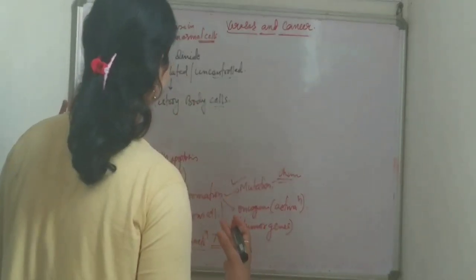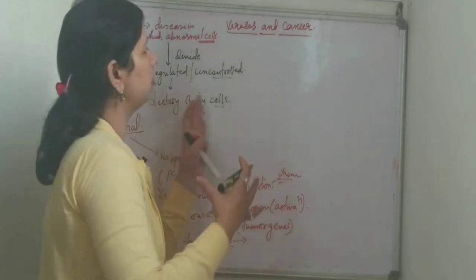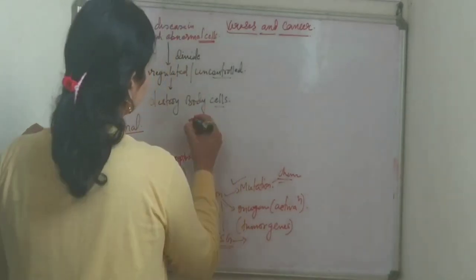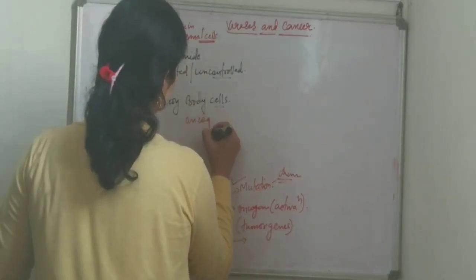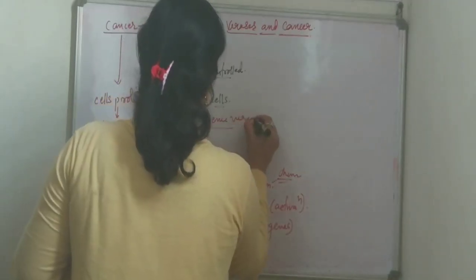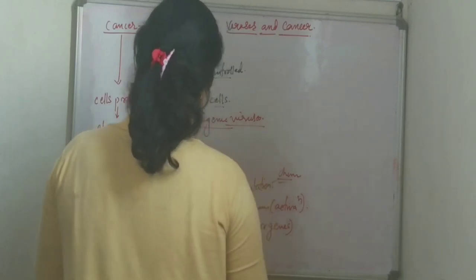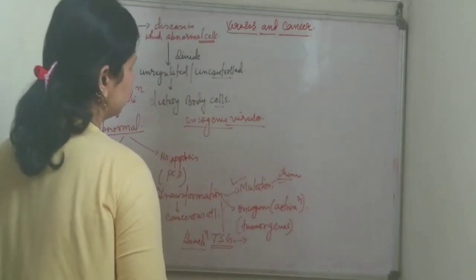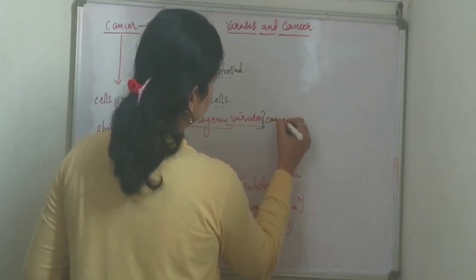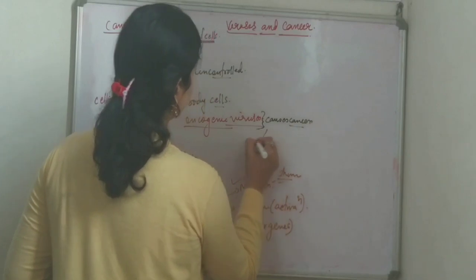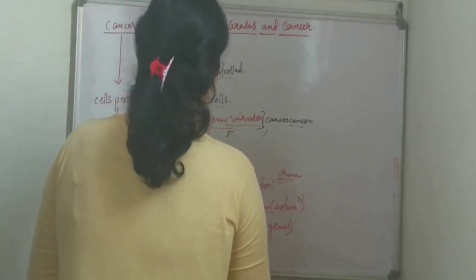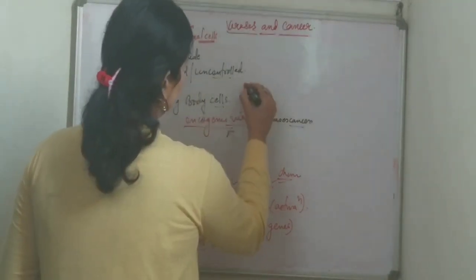As a result, they are transformed and then they behave like tumorigenic cells. In the context of viruses, those types of viruses which cause cancers are known as oncogenic viruses.